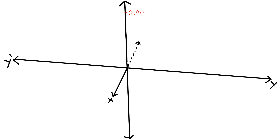When z equals one on the plane, we get the ellipse x squared by 1 squared plus y squared by 4 equals one on the plane z equals one.